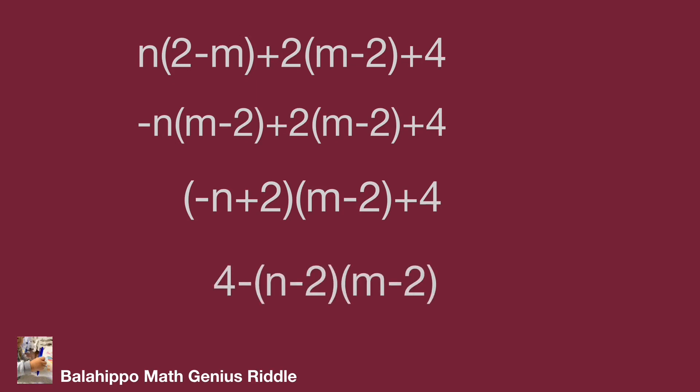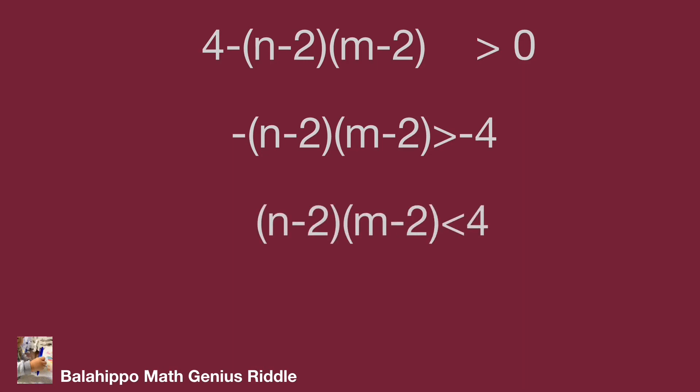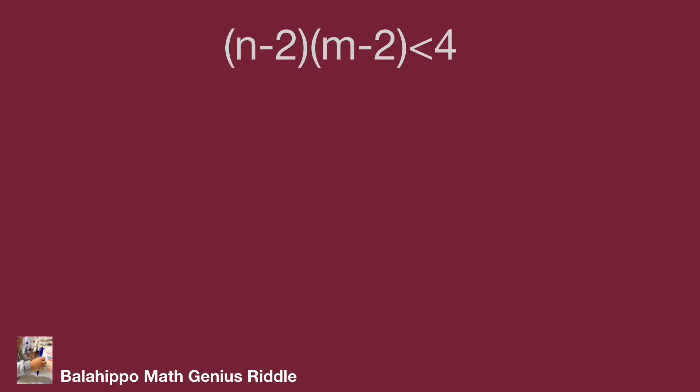Adjust the sequence. So let's get 4 minus quantity n minus 2 times m. In the beginning we said this quantity is bigger than 0. So minus quantity n minus 2 multiply m minus 2 larger than minus 4. Therefore, quantity n minus 2 quantity m minus 2 multiply less than 4.